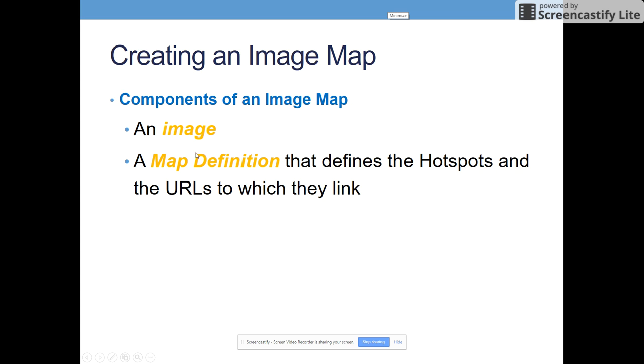So again, you have to have these two components, both of them, the image and the image tag, as well as a map definition with a map tag that defines those hotspots. If you don't have both components, you won't be able to actually create a working image map in your website.